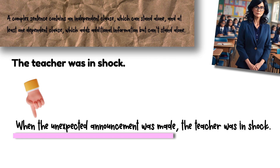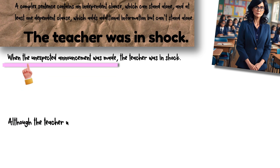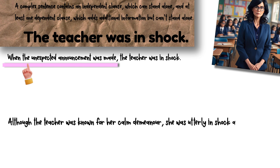Two: 'Although the teacher was known for her calm demeanour, she was utterly in shock after the event.' In this example we're using a dependent clause that introduces contrast — although the teacher was known for her calm demeanour. This structure not only tells us about the teacher's usual temperament but also highlights the intensity of her shock, making it all the more impactful. Isn't that a lovely way to add complexity?